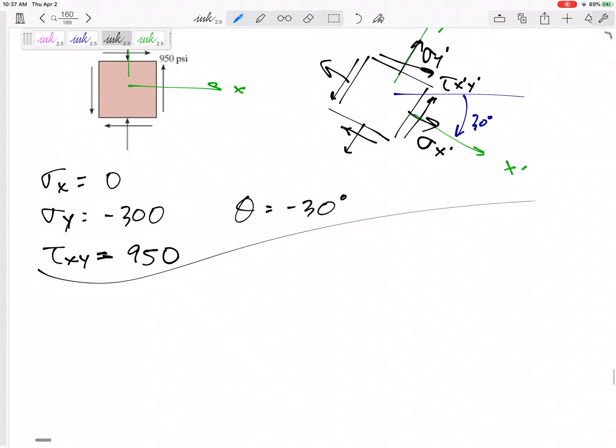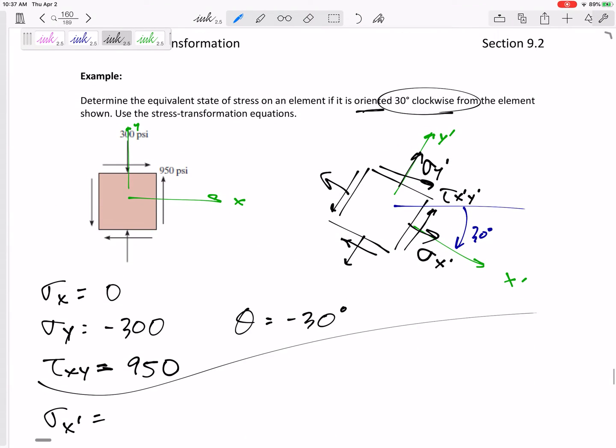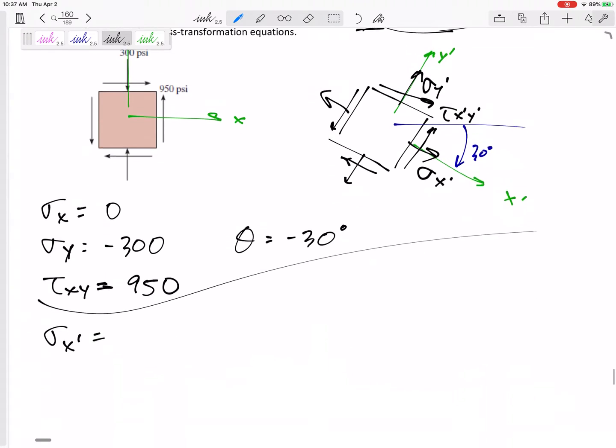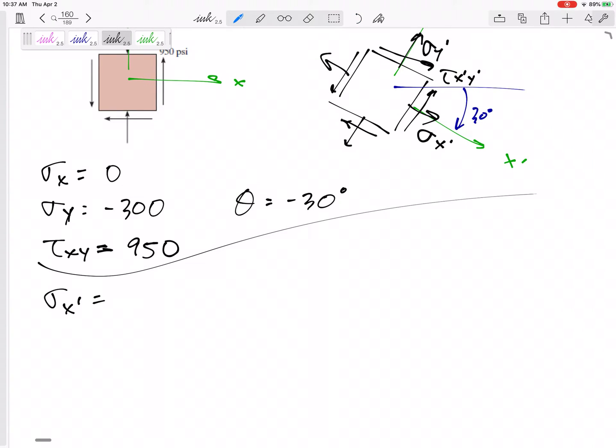Okay. So then it's simple as plug and play, right? My new x prime y prime. Now, my old sigma x is zero. I don't know if you could kind of figure this out or visualize this. If we rotate it, some of these 950 and 300 might kind of be distributed, kind of get turned to my new x direction. Just because I have an old zero doesn't mean the new one is also zero. Let's plug into these equations. The equation is sigma x plus sigma y divided by 2 plus sigma x minus sigma y divided by 2 cosine of 2 theta plus tau xy sine of 2 theta.